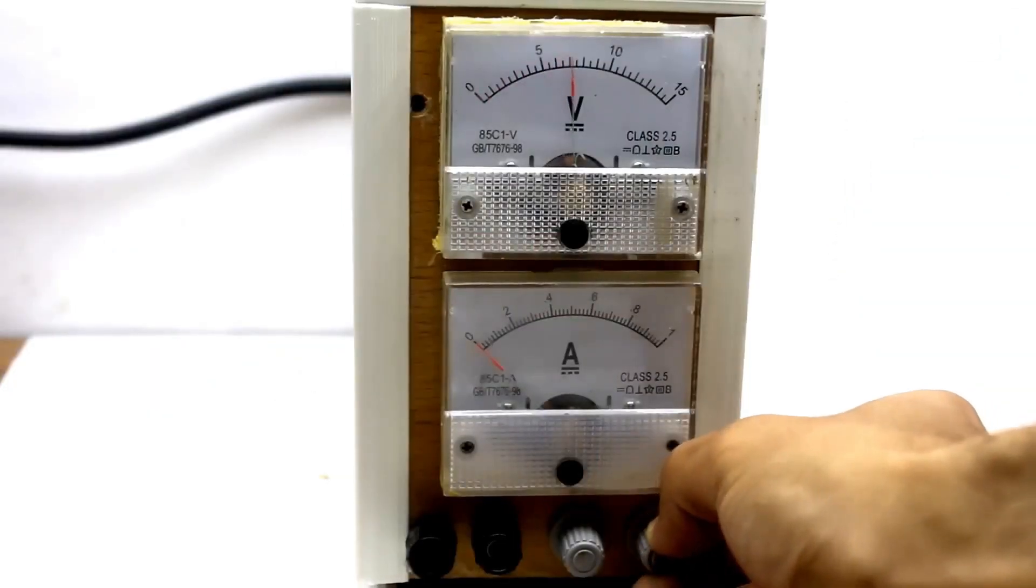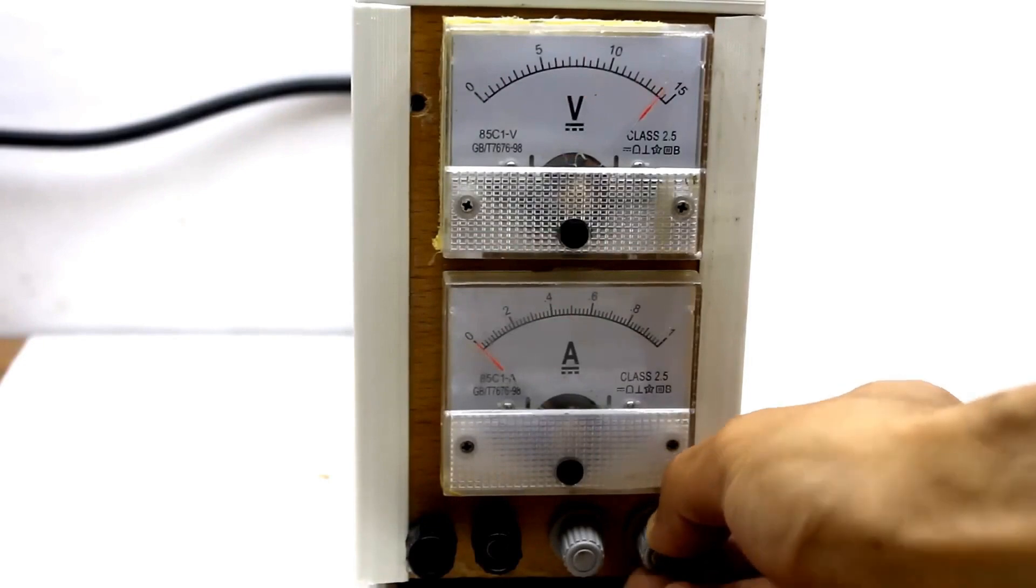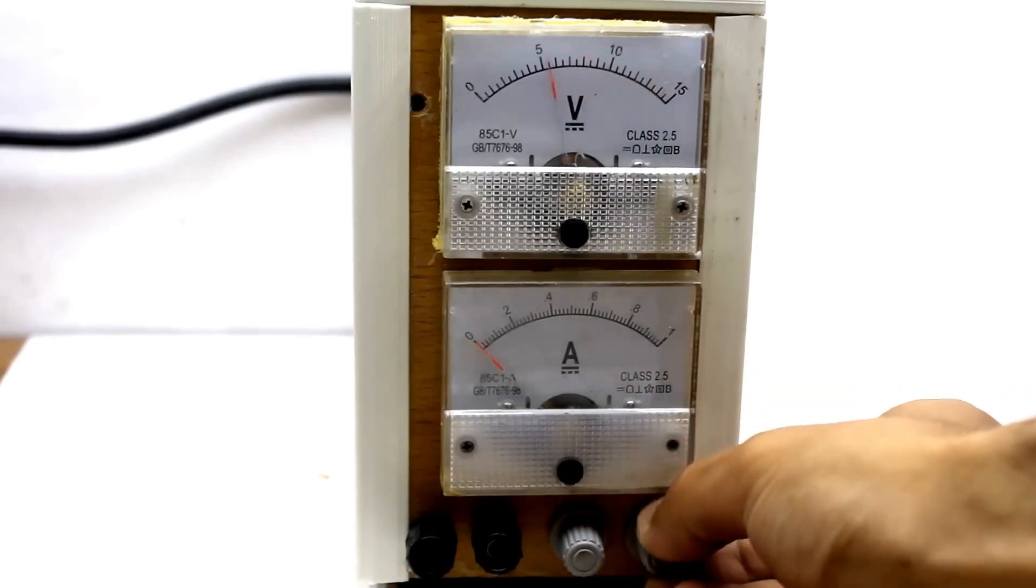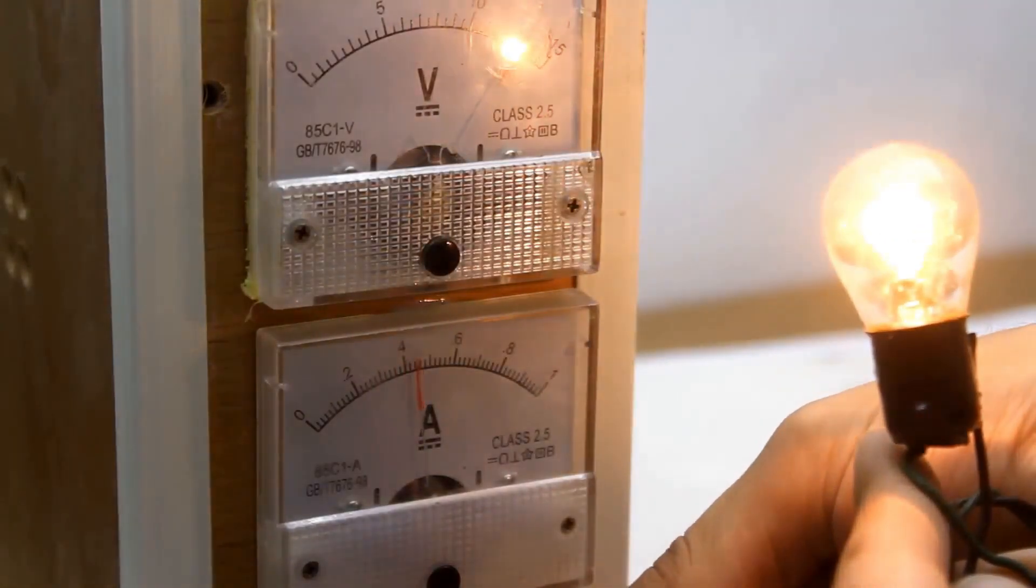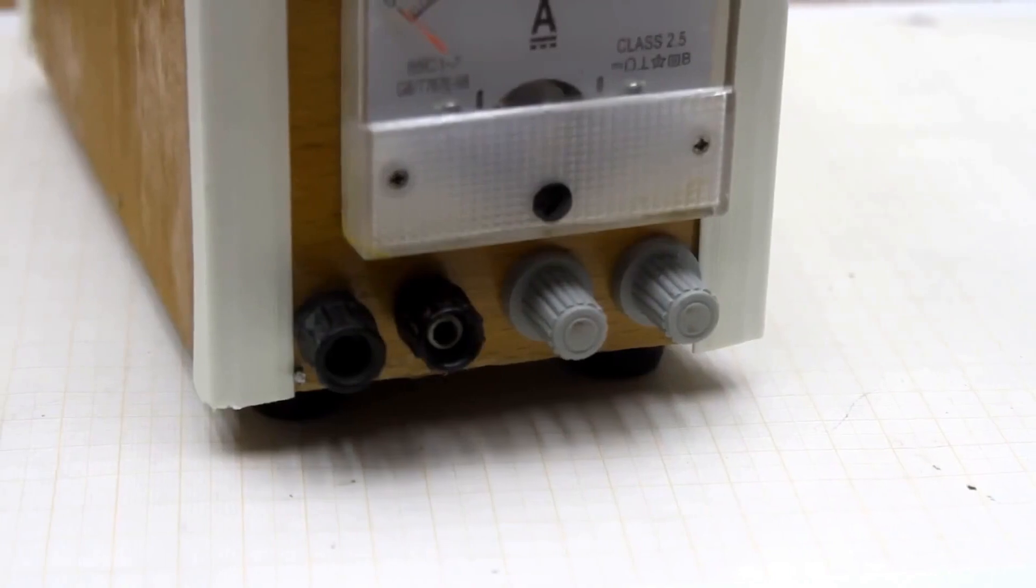Using an adjustable power supply allows you to test DIY projects with different power voltages. The power supply we discussed can deliver up to 1 amp of current to the load. I assure you, that's more than enough for most hobbyist needs.